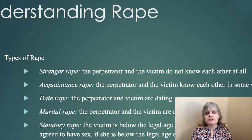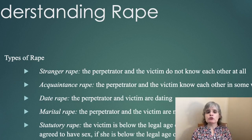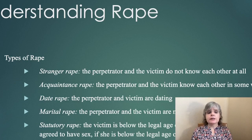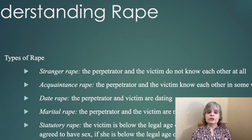There are different types of rape. Stranger rape is usually what we think of — the perpetrator and victim do not know each other at all, for example an alley at night. Acquaintance rape is when they know each other in some way, such as someone from church or work. Date rape is when the perpetrator and victim are dating. Marital rape is when they are married. Statutory rape is when the victim is below the age of consent — even if they agreed, if she's below the legal age, the activity is understood to be rape.